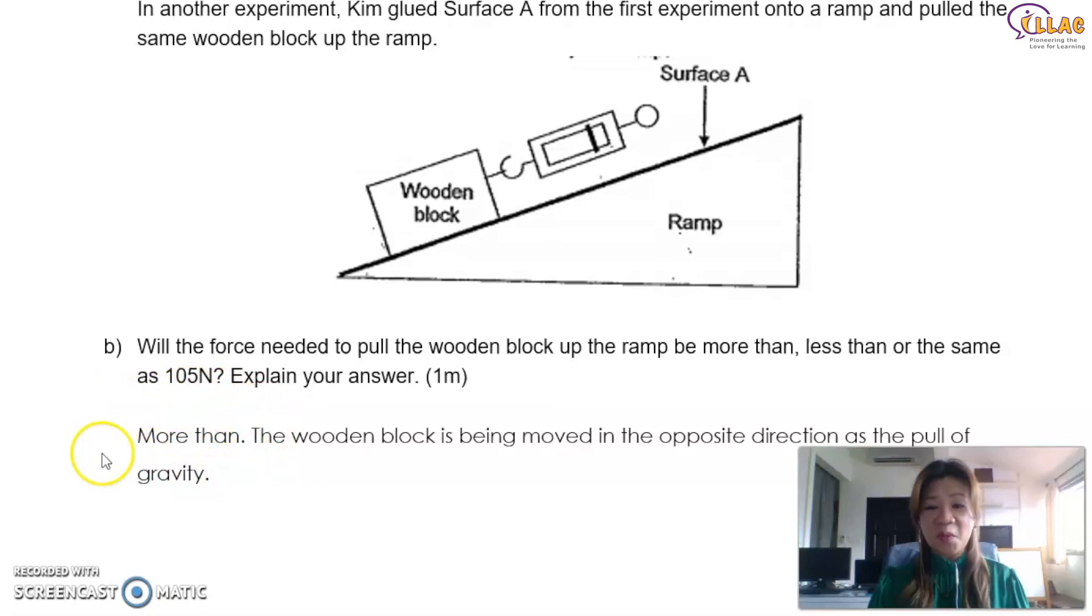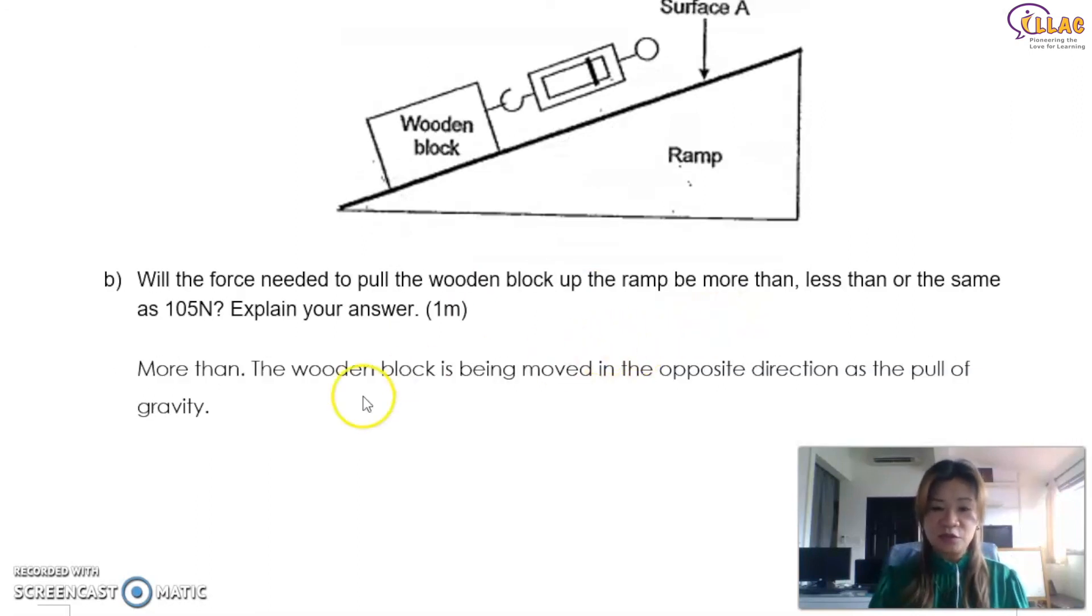Because obviously, you imagine yourself running up a hill versus running on a flat ground. Which one is harder? Of course, the one running up the field because there's more resistance for you due to the gravitational pull trying to get you down. So going uphill is definitely harder, more strength is needed. So how do you explain that you must put the word gravitational pull or the pull of gravity inside your answer. So the wooden block is being moved in the opposite direction as the pull of gravity or gravitational force. So that's how you answer these kind of questions using false keywords.